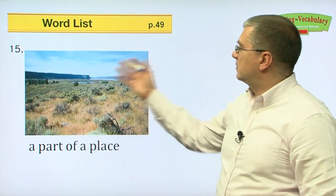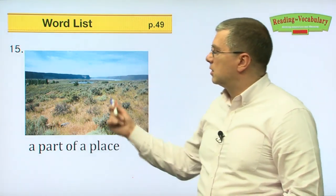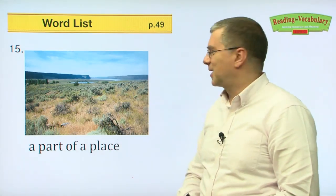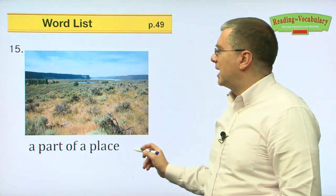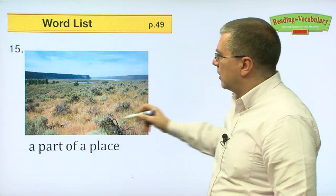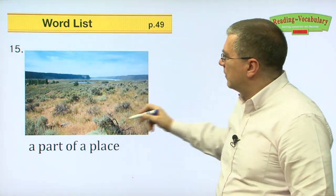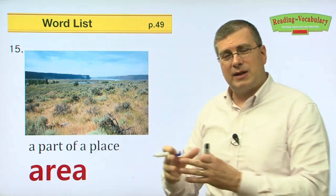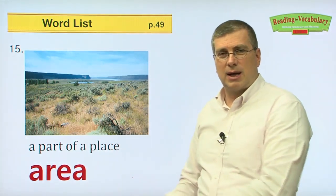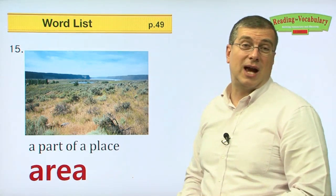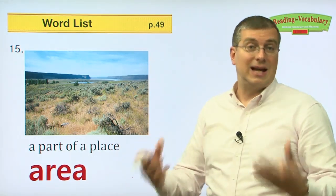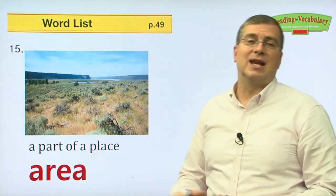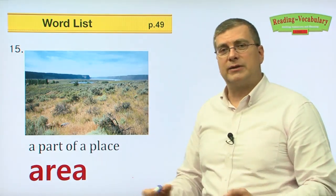Number fifteen. A very peaceful picture — looks like the American West. A part of a place. If we look at this wide landscape, it's a very big area. An area is a part of a place. The area in your house — your bedroom is an area, your kitchen is an area. It's part of a place.